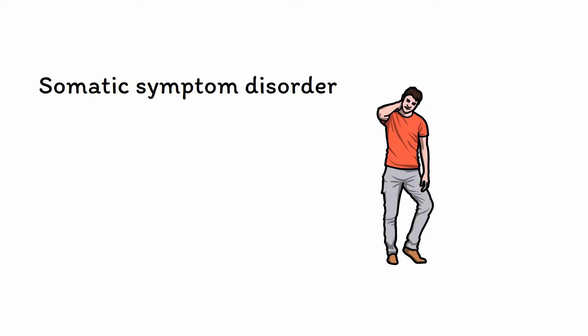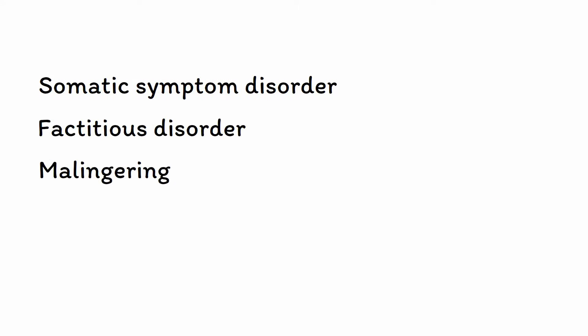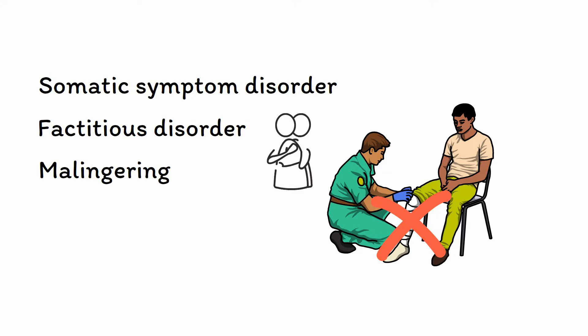First, somatic symptom disorder is when a patient experiences recurrent medically unexplained symptoms and is distressed and disabled by them. Notably, these symptoms are genuinely experienced by the patient. In contrast, factitious disorder and malingering are when the patient knowingly fakes having an illness. In factitious disorder, this is done to gain the social benefits associated with the sick role, such as sympathy and attention, while in malingering the goal is to obtain some external reward like disability payments.